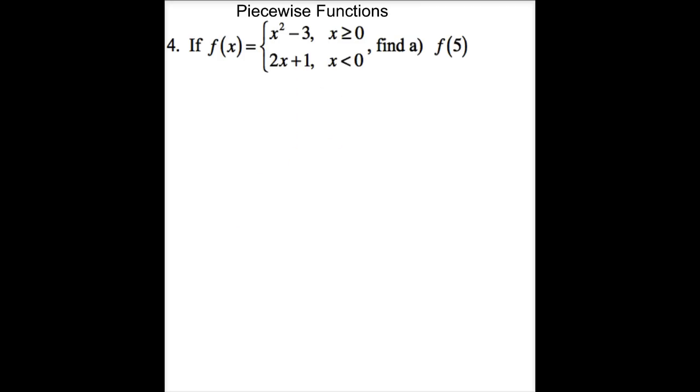Now, another thing we do a lot of in calculus is piecewise functions. So what this says is the function is x squared minus 3 as long as x is positive, and 2x plus 1 when x is negative. So I want to define f when x is 5. Well, is 5 in this region or this region? And, of course, it's in this region right here. x is positive. So f of 5 is equal to 5 squared minus 3 or 25 minus 3 or 22.